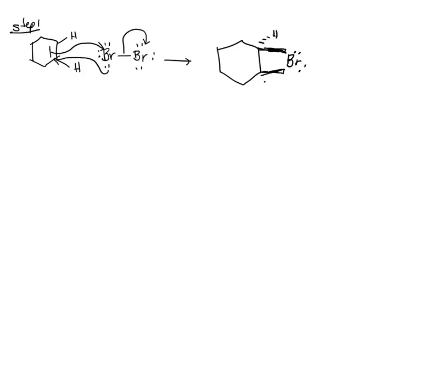If you do the formal charges, you now have a positive charge on that bromine which is neutralized by the negatively charged bromide. That is what happens to the right bromine. So that's step one.